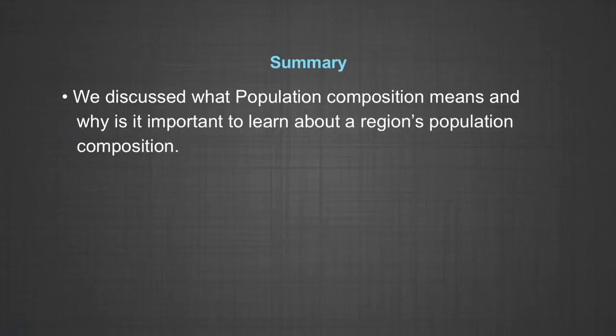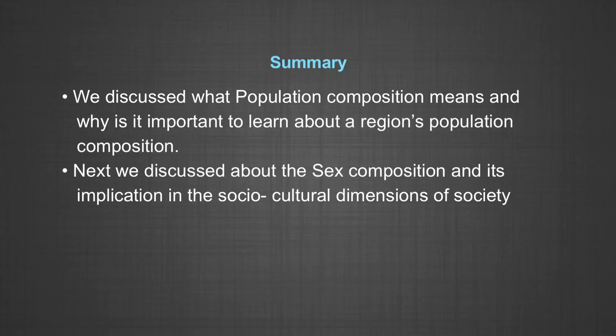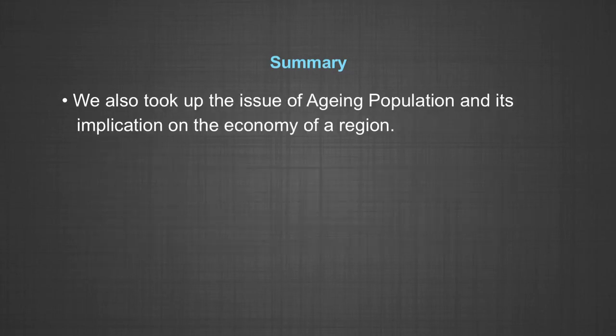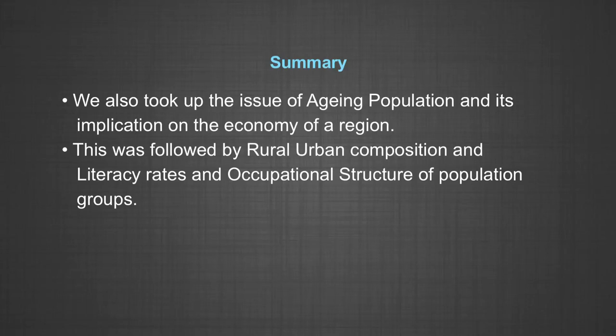With this, we come to the end of the module on population composition. To briefly summarize: we discussed what population composition means and why it is important to learn about a region's population composition. Next, we discussed sex composition and its implication in the socio-cultural dimension of society. Our next discussion was on age structure and its role in calculation of dependency ratio. We also took up the issue of aging population and its implications on the economy. This was followed by rural-urban composition, literacy rates and occupational structure of population groups. Thank you.